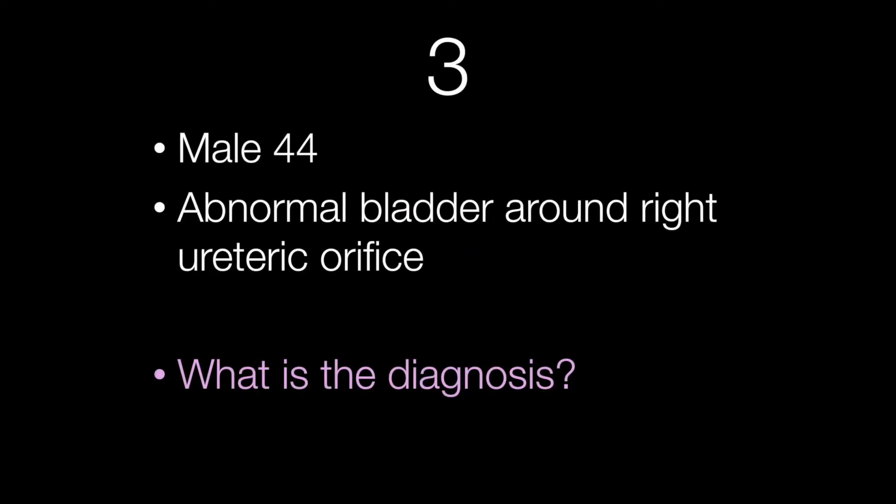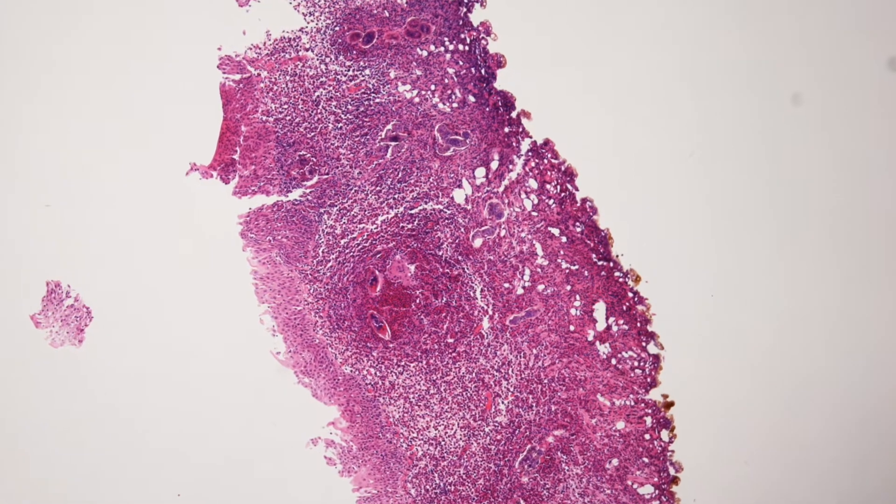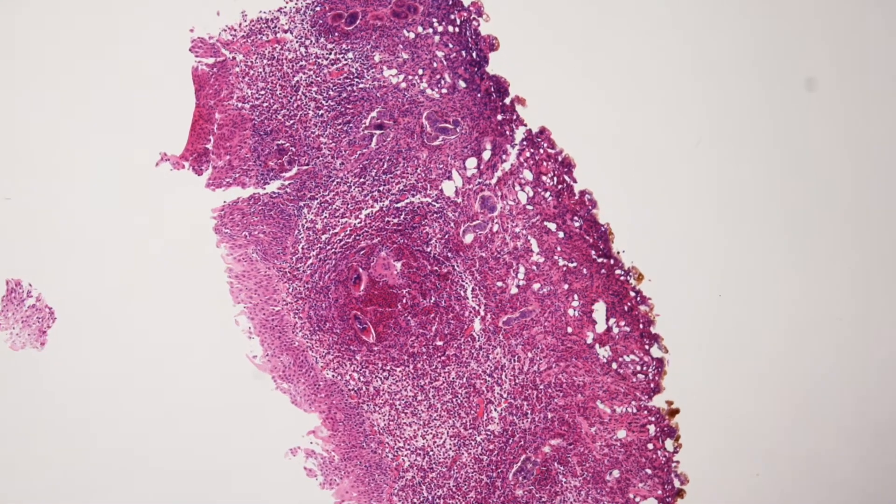Case number three is from a male of 44 with abnormal bladder around the right ureteric orifice. What is the diagnosis? So again we'll start off with a low power view.